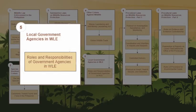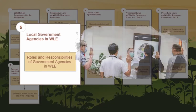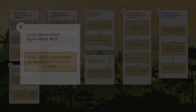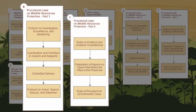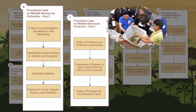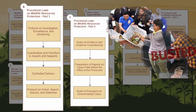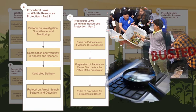Roles and Responsibilities of Government Agencies in Wildlife Law Enforcement, the fifth module, provides a summary of how local agencies can work together to combat wildlife crimes. Procedural Laws on Wildlife Resources Protection are the focus of the last two modules, where you will learn the processes and procedures wildlife law enforcers follow to implement wildlife protection and conservation laws.